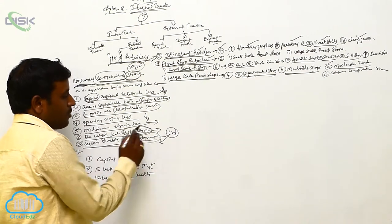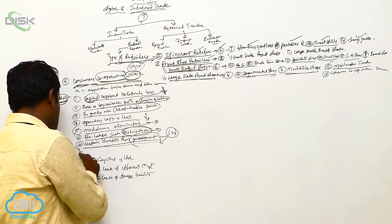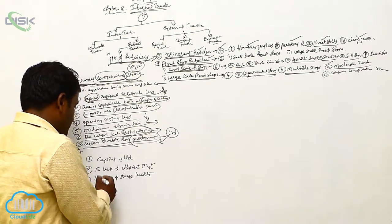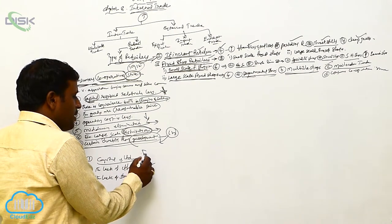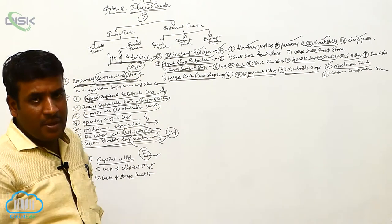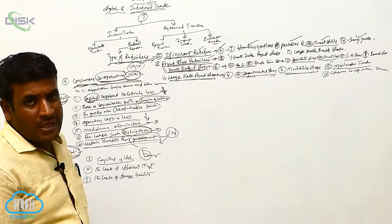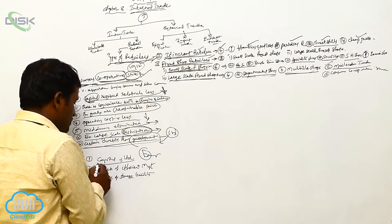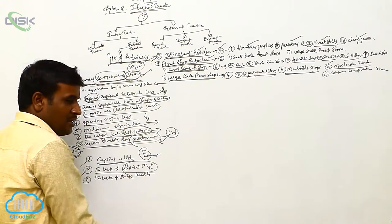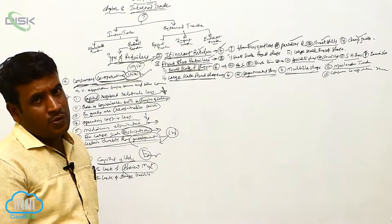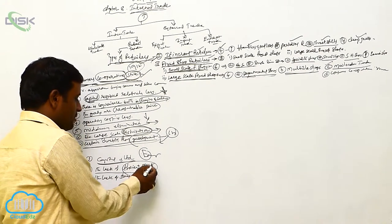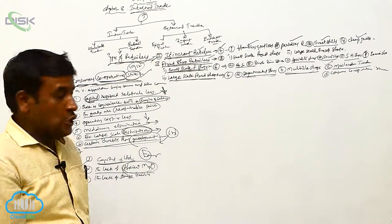Now the disadvantages of consumers cooperative stores. The first disadvantage is that capital is limited. Since there is no profit-earning principle, members are not interested in contributing capital, so the capital remains limited. The second disadvantage is the lack of efficient management — those who cannot take risks tend to establish this type of store, so efficient management is not available.